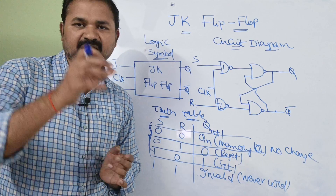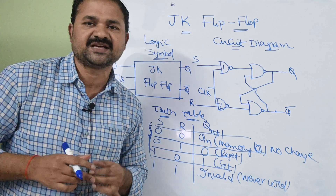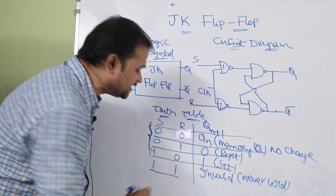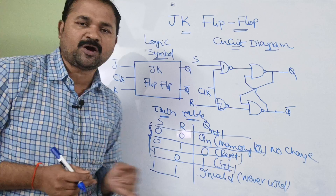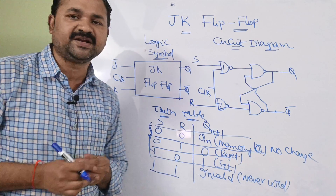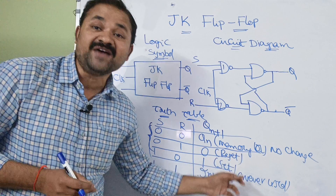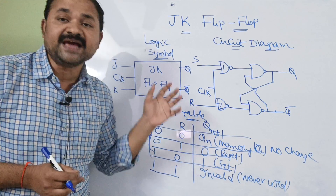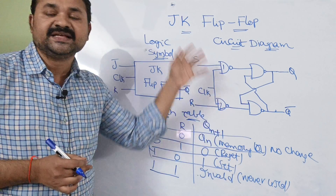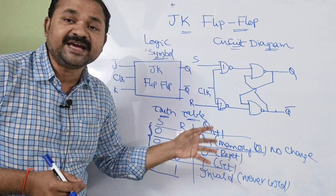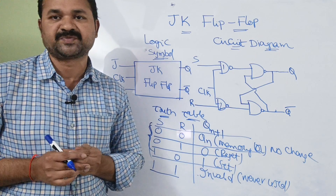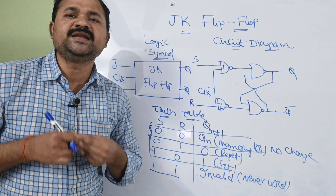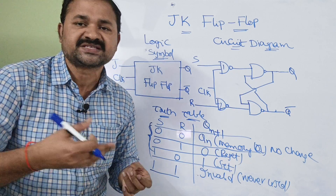Please refer that video. I will share that video link in the description as well as in the comments. The last case is in SR flip-flop: if the inputs are 1, 1, then the output is invalid — we never use this combination. Whereas here in JK flip-flop we can make use of that combination. We are using JK flip-flop mainly to overcome the drawback of SR flip-flop.